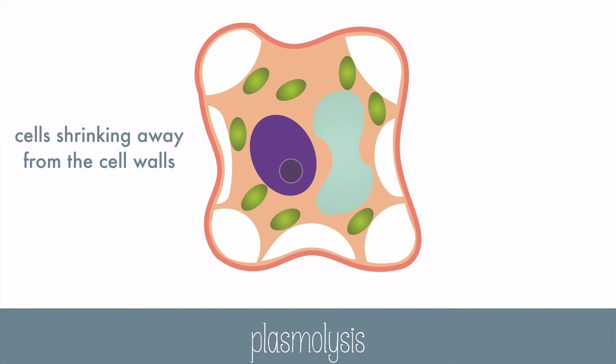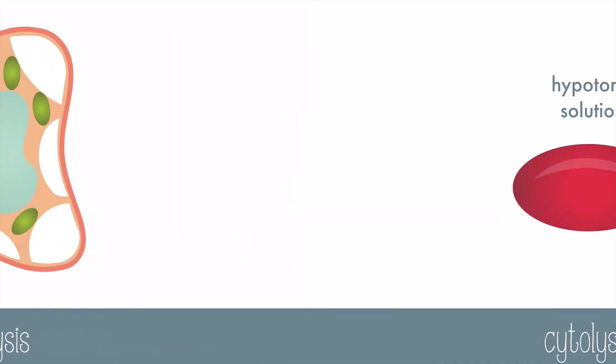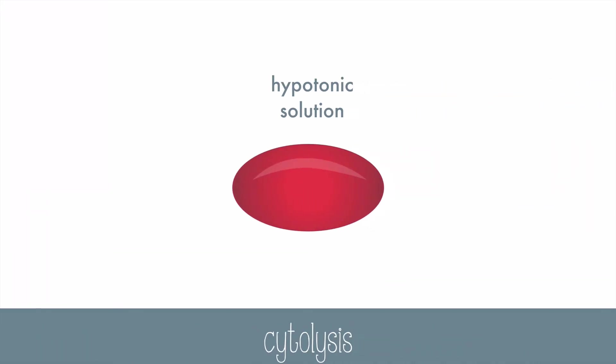Some animal cells don't have a way to deal with hypertonic or hypotonic solutions. In a hypotonic solution, they have a problem. When a red blood cell is in a hypotonic solution, it swells and eventually could burst. The bursting of cells is called cytolysis. This could also happen if a saltwater egg was placed in a freshwater tank, so don't make that mistake.